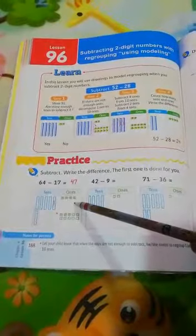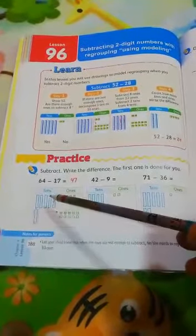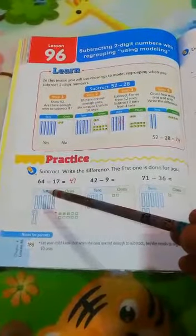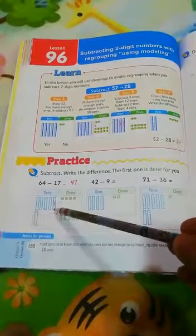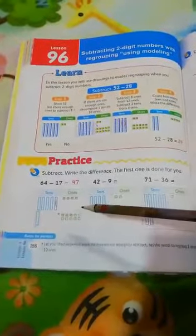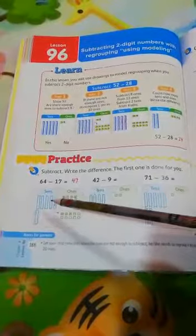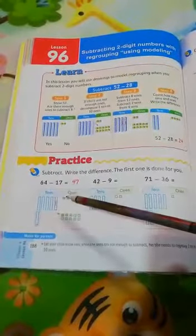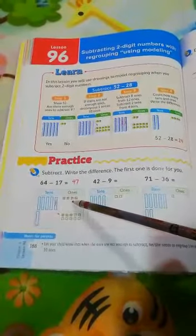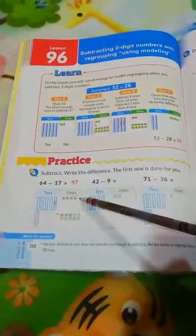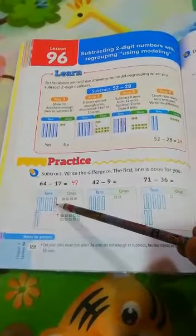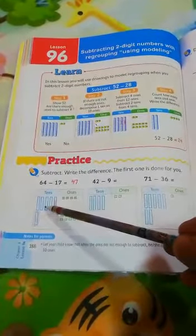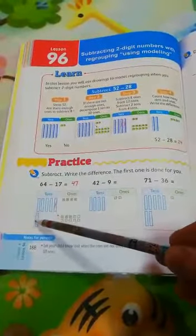Okay, 64. Let's count the ones: 1, 2, 3, 4. Now the tens: 10, 20, 30, 40, 50, 60.